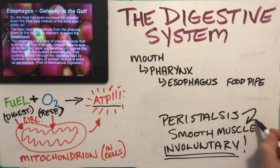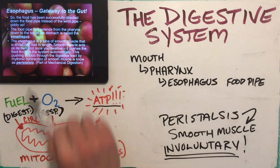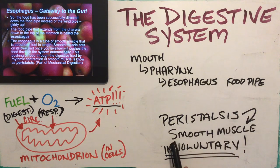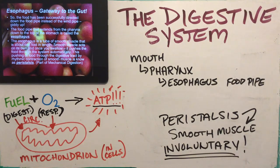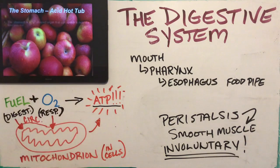Peristalsis is the rhythmic contraction of smooth muscle that pushes food throughout the tube that makes up your digestive system. It is part of mechanical digestion.